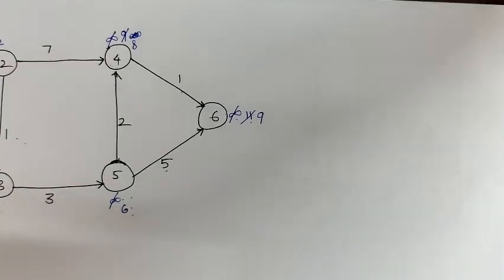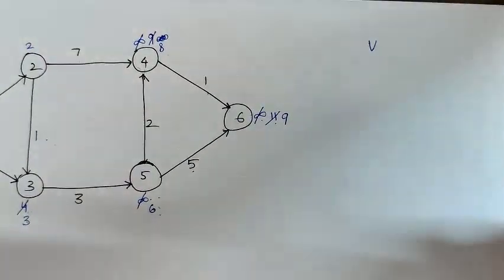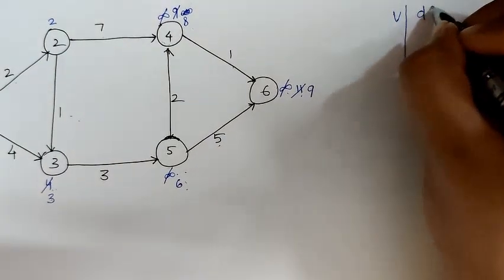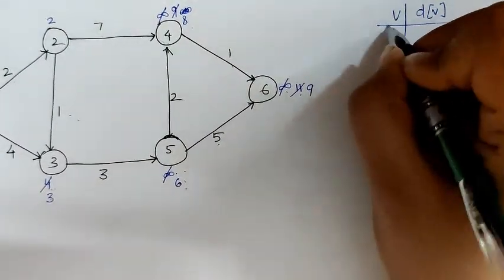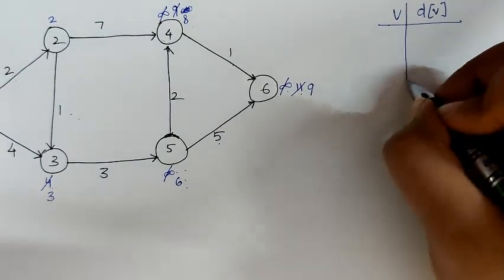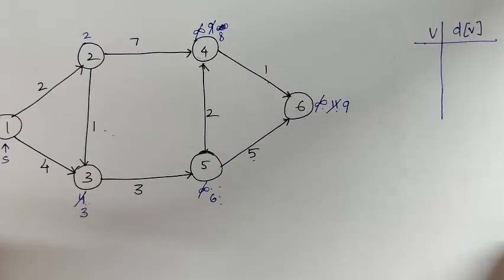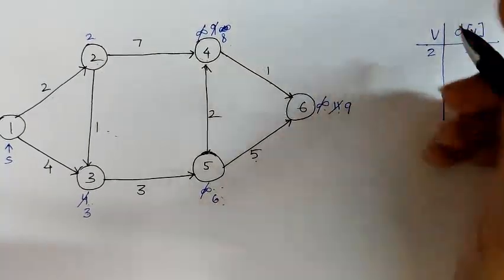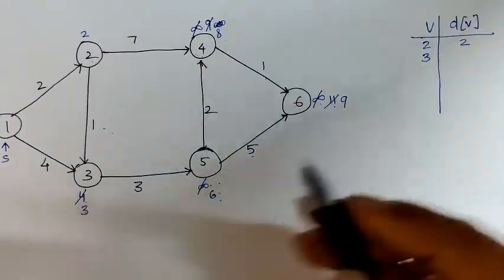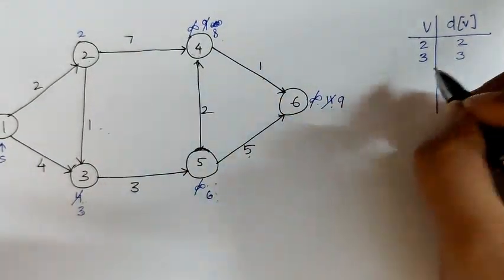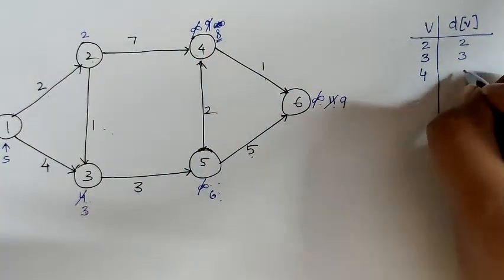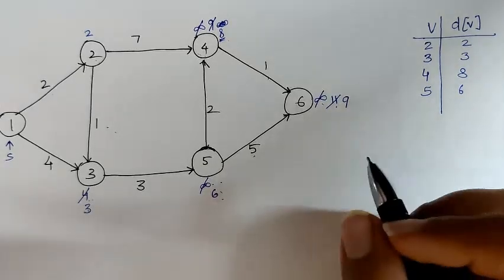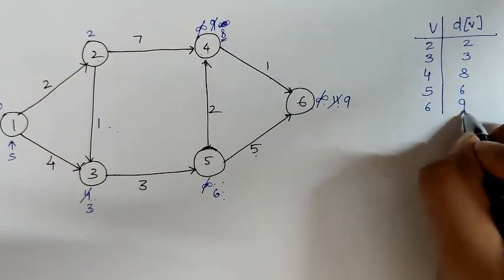Now, this can be written in a tabular form. Here, V is the vertex and DV is the shortest distance of each vertex. From 1 to 2, the shortest distance is 2. For vertex 3, the shortest distance is 3. For vertex 4, we have the shortest distance as 8. For vertex 5, we have the shortest distance as 6. And for vertex 6, we have the shortest distance as 9.